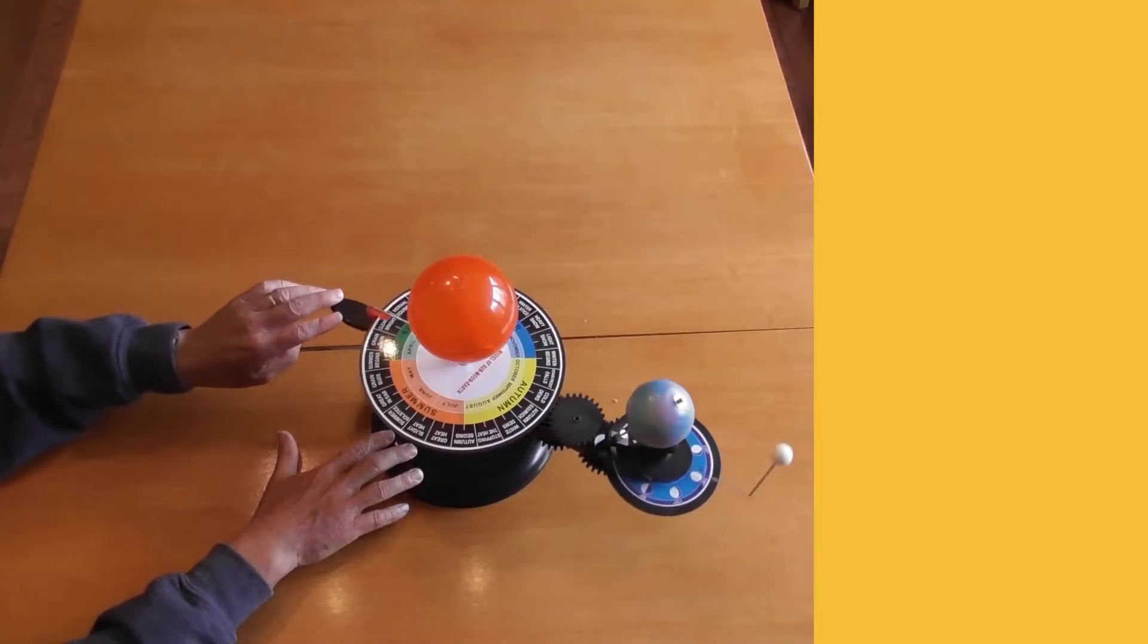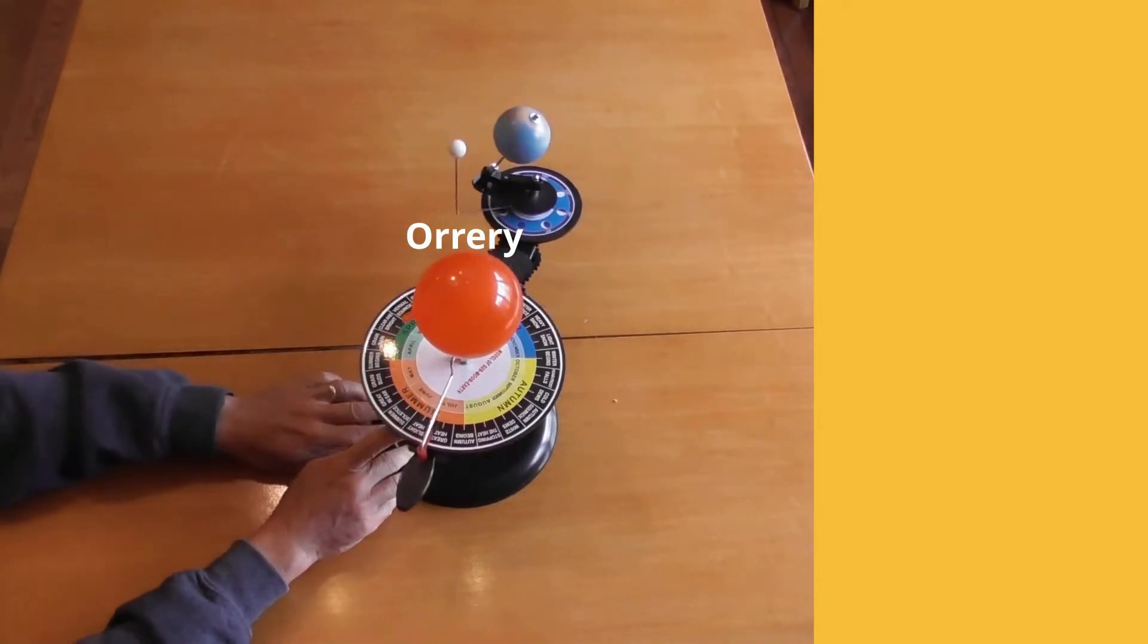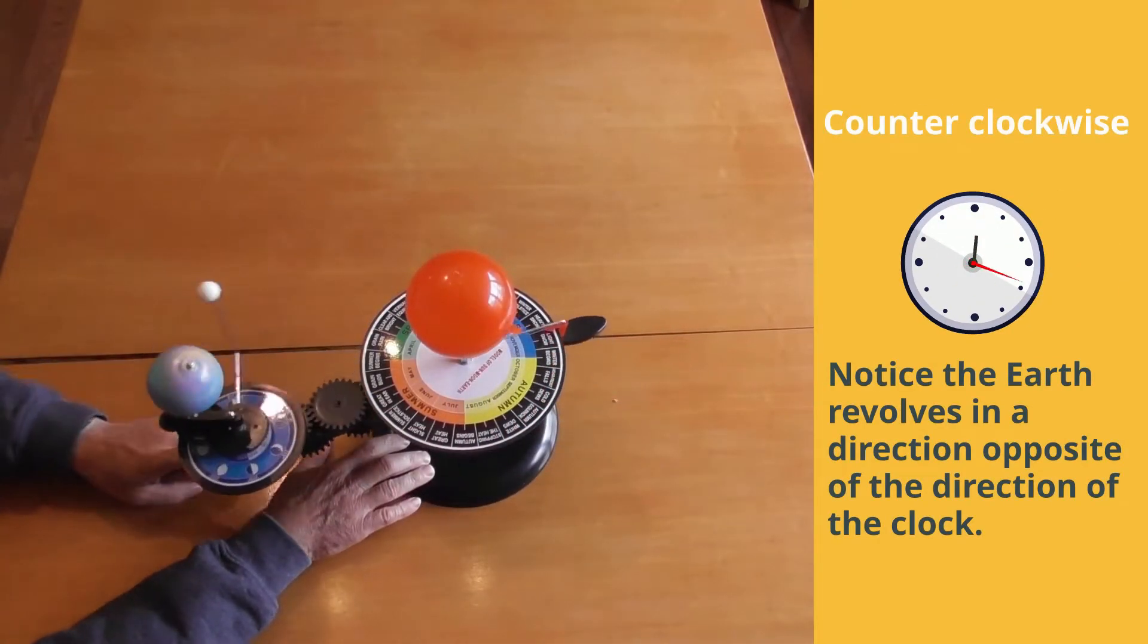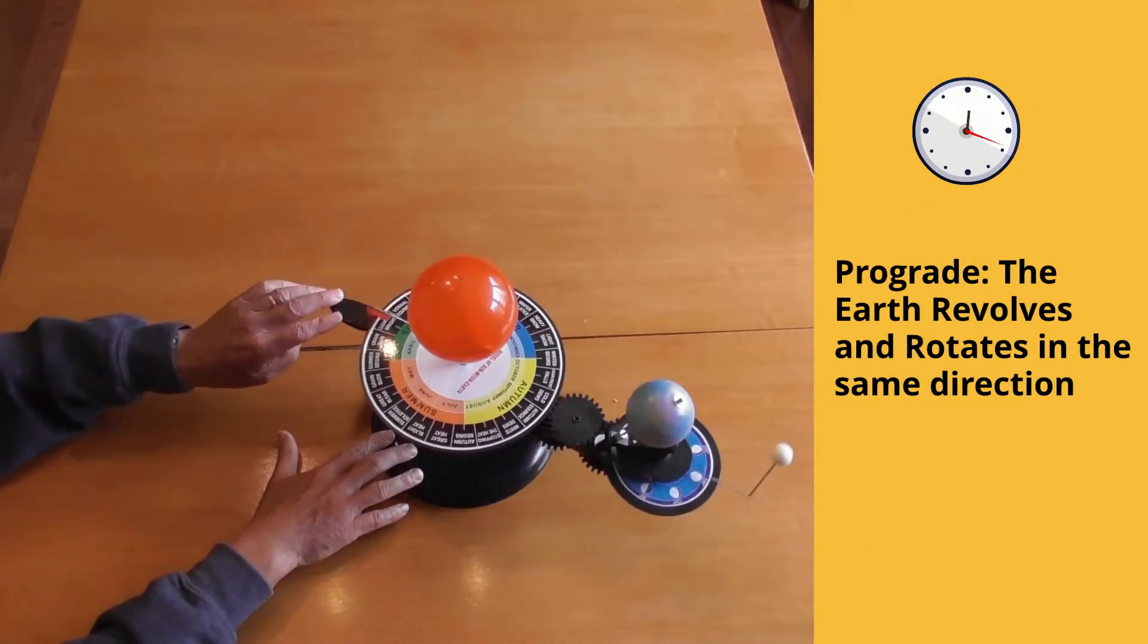I have a simple model here called an orrery that shows us how the Earth revolves around the Sun. The Earth revolves in a counterclockwise direction around the Sun. It also orbits in a prograde manner, which means it revolves and rotates in the same direction, and that is counterclockwise.